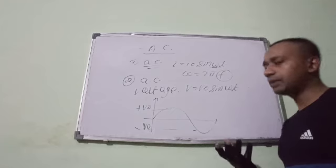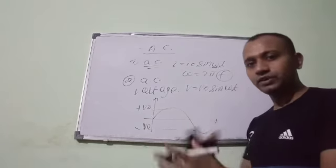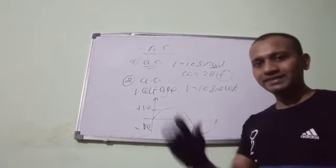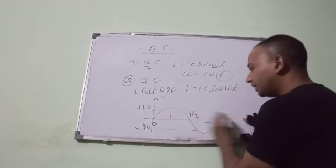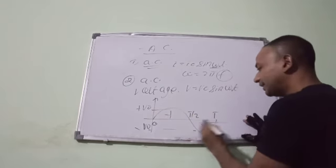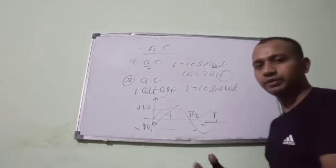And the interesting thing about AC current or voltage is that their average value for one time period, for complete cycle, is zero. Whatever value we are getting for first half, from zero to T by 2 is positive, and from T by 2 to T it is negative. So it averages out to be zero.